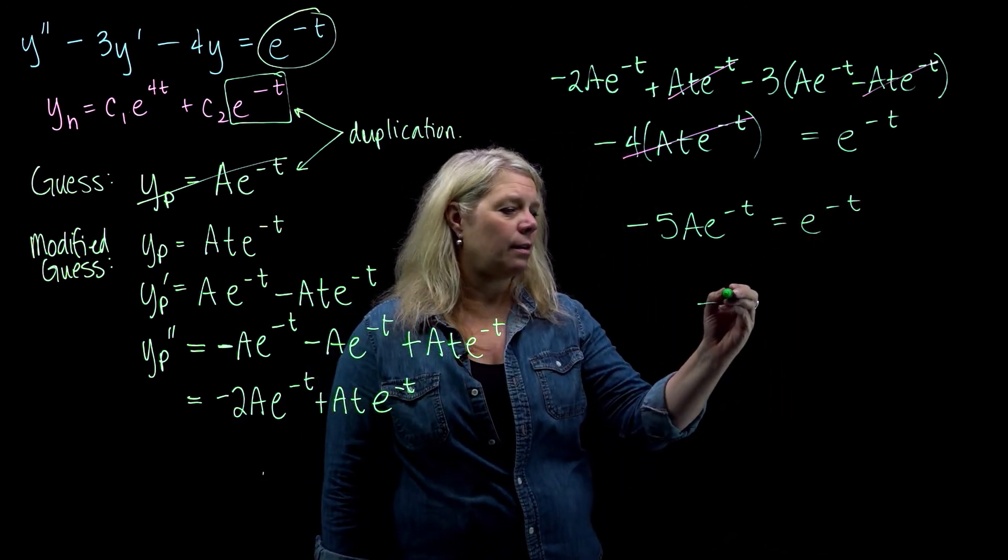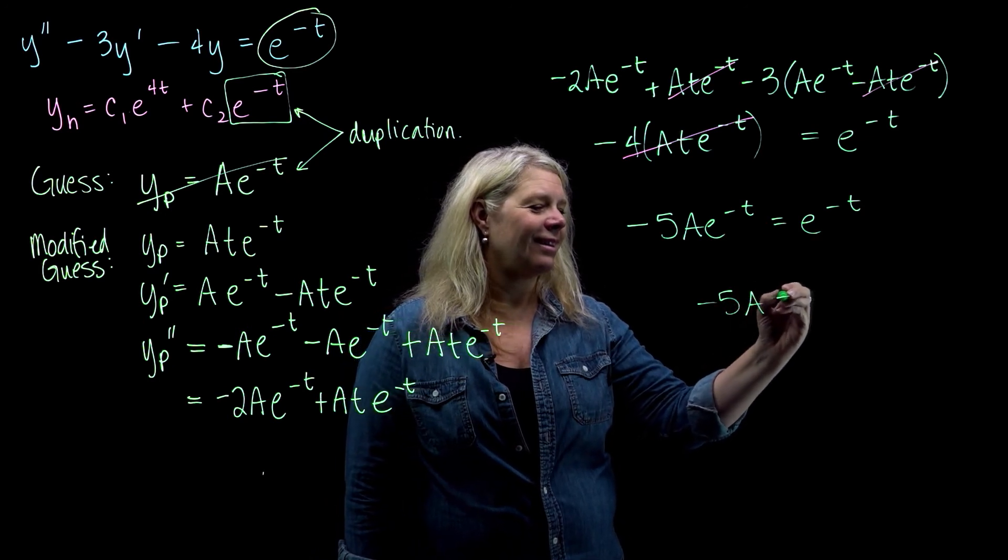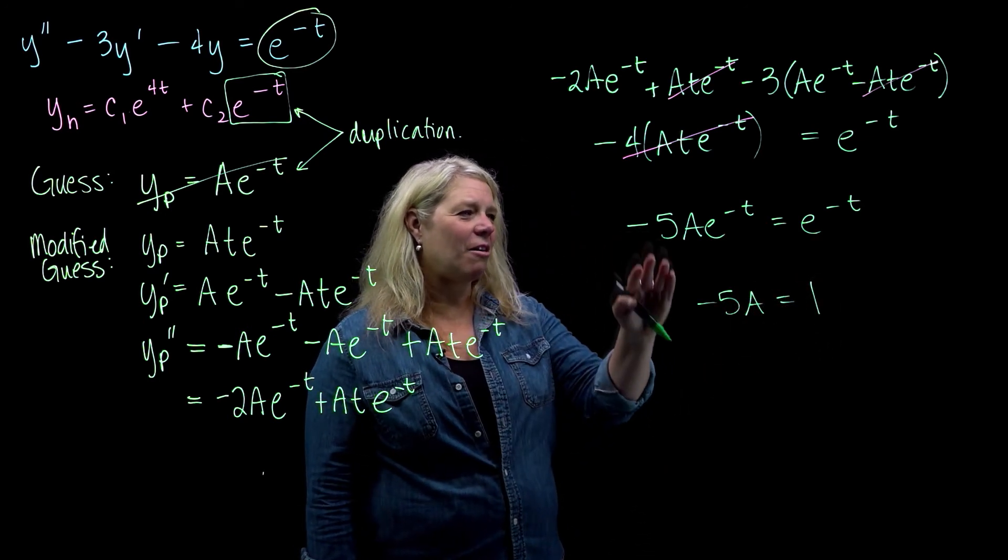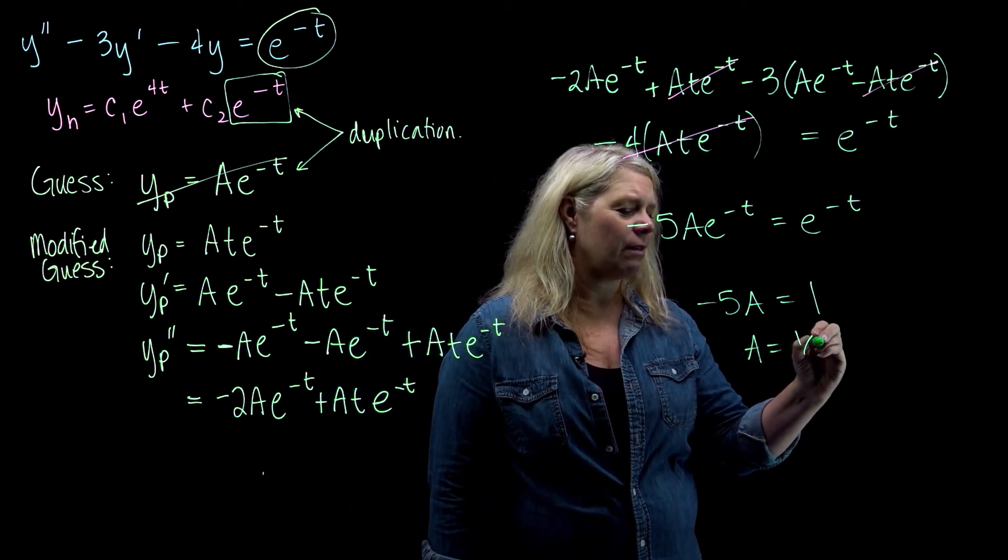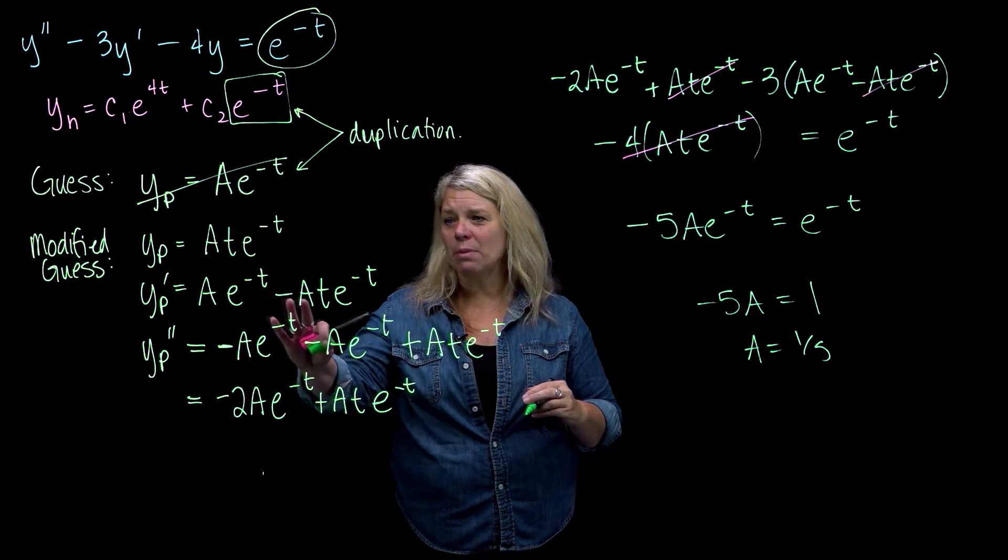Alright, so we just set our coefficients equal, minus 5A equals 1, so A is negative 1 fifth. And so, there we have our y_p.